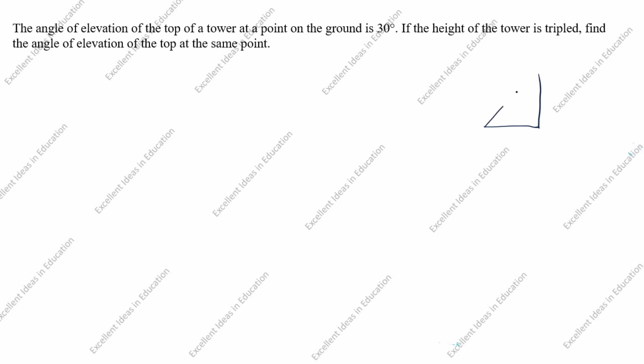What is given in this question: the angle of elevation of the top of a tower — this is the top of the tower — the angle of elevation at the point on the ground is 30 degrees. If the height of the tower is tripled, we will take this height as three h.